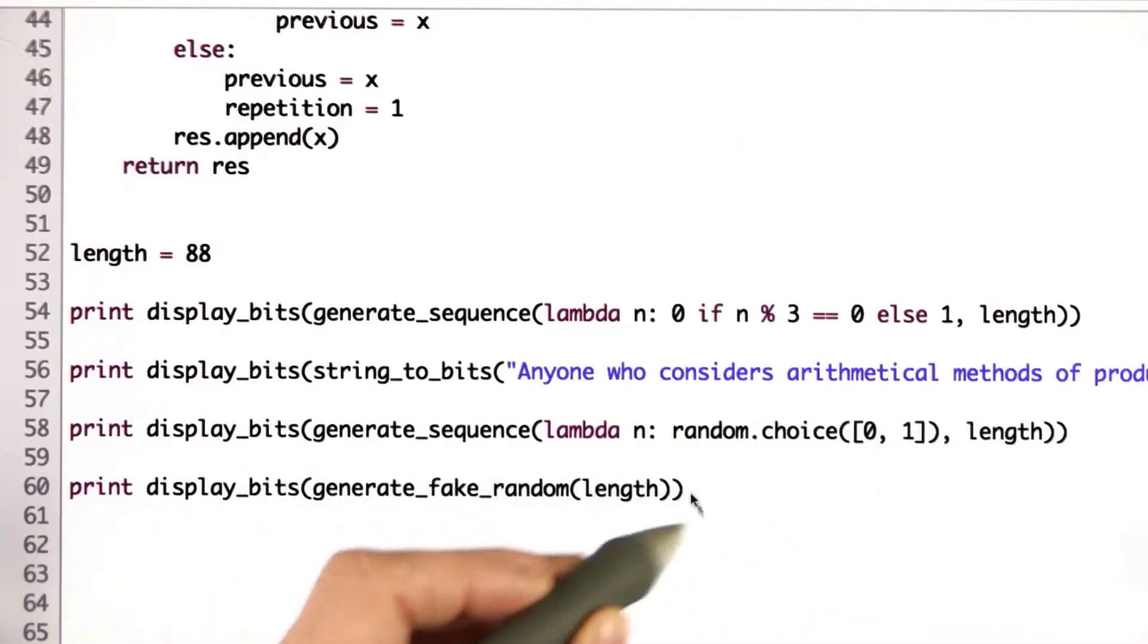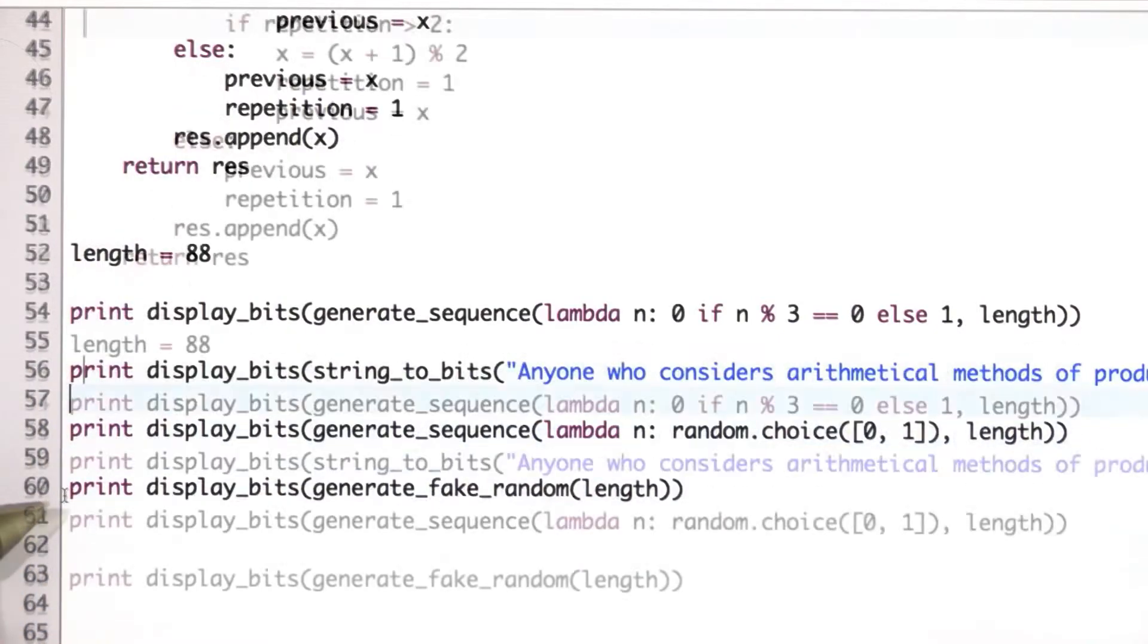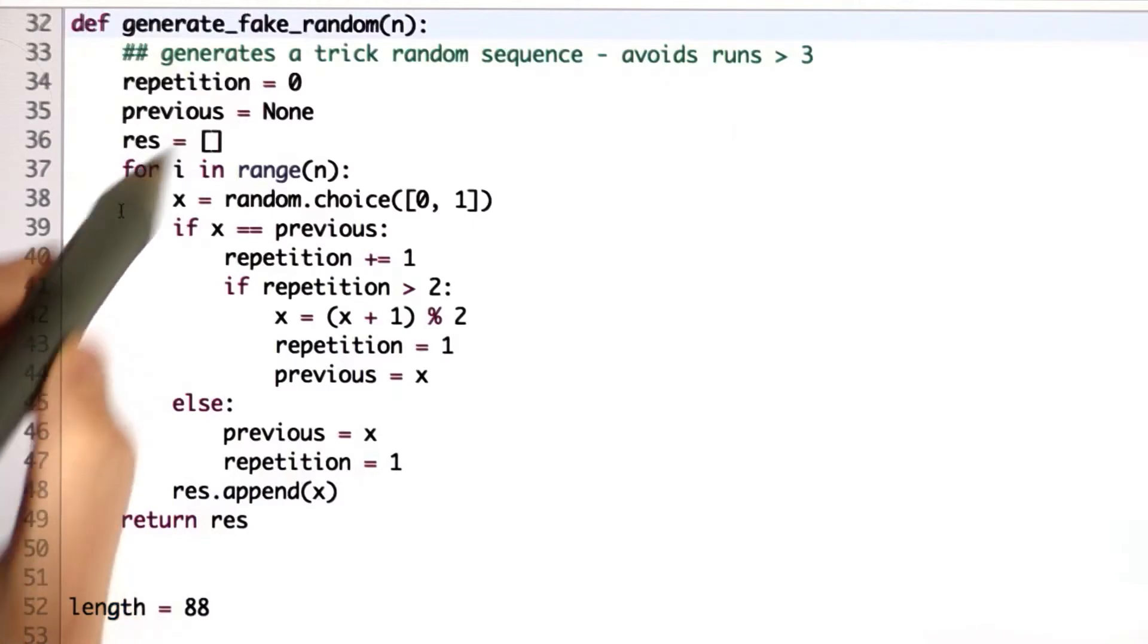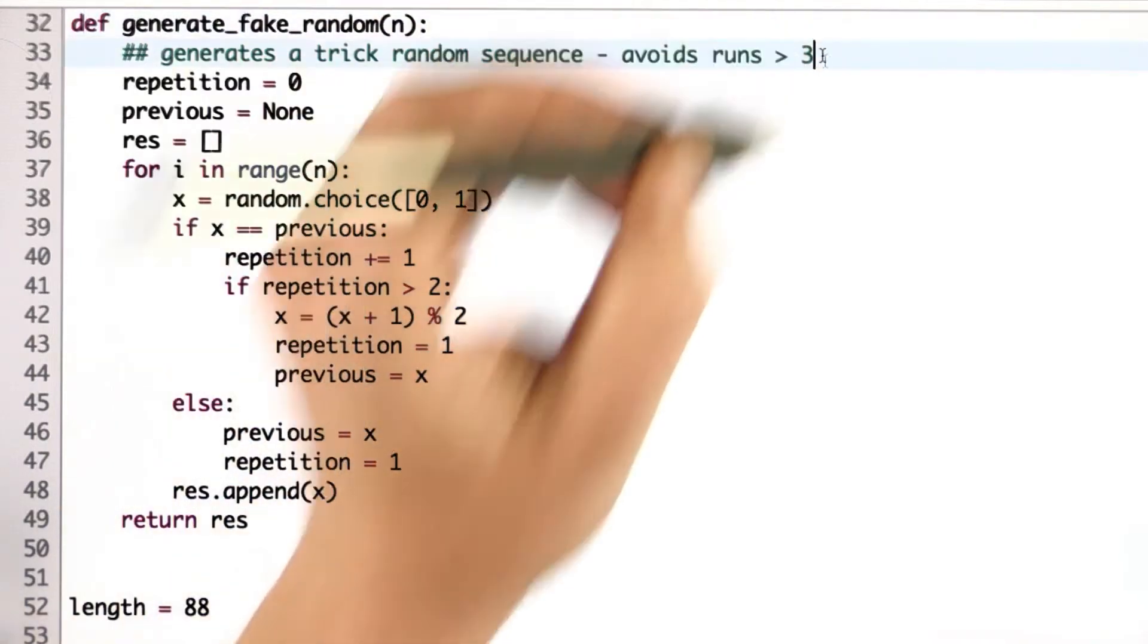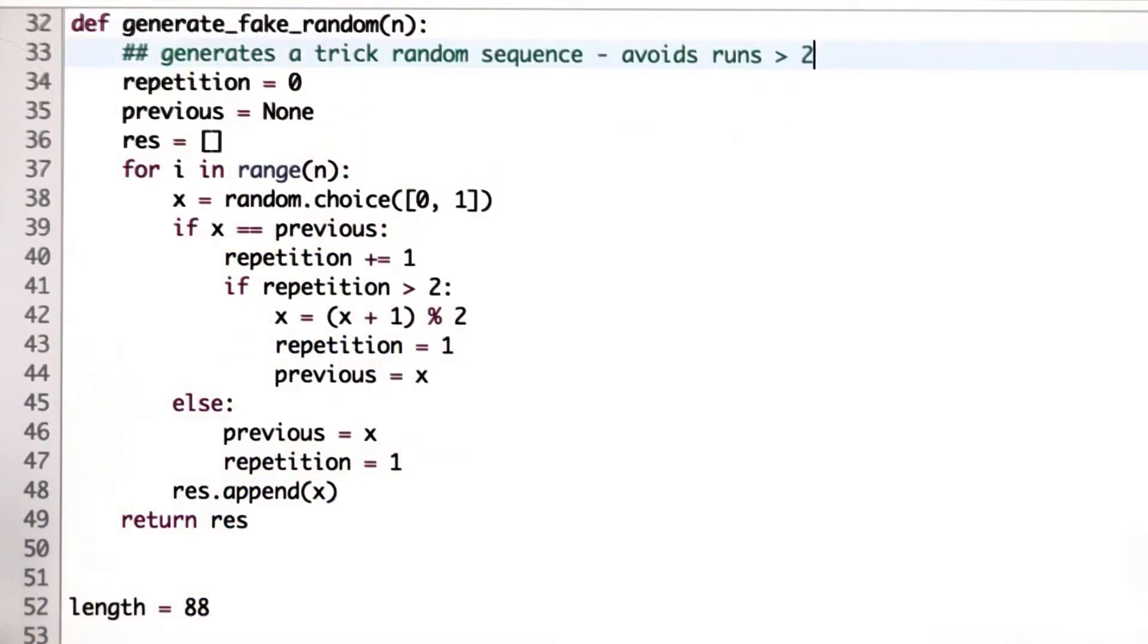The fourth one is generated using this procedure called generate fake random, which starts by making random choices, but is designed to trick humans by not having repetitions greater than 2. And I should change my comment. I had originally done it with greater than 3, and that looks to most humans very random.